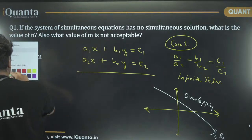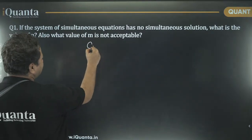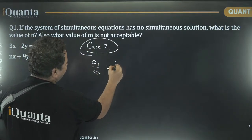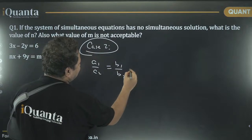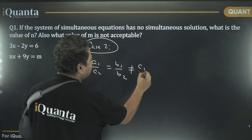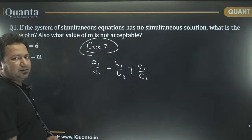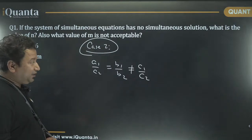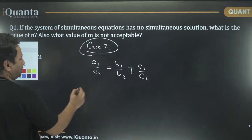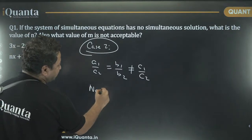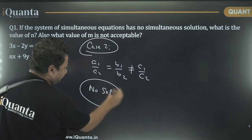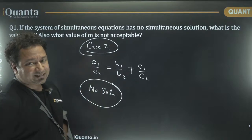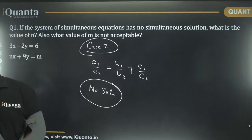If I talk about case 2. Here what happens? A1 upon A2 is equal to B1 upon B2 is not equal to C1 upon C2. This is a weird case. You know why? Because if you start doing it, you will find no solutions at all. There will be no solutions. Because the left hand side of the system, where we have X and Y, that will be cancelled. But the right hand side would not be cancelled.